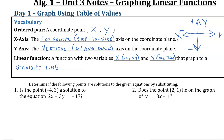A linear function is a function with two variables — x, which is your input, and y, which is your output. When you plot the relationship between these values, they graph onto a straight line. Hence the name linear function.